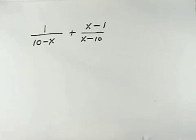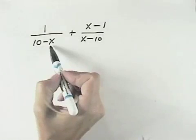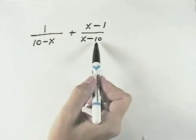So what we can do is just reverse the sign on those terms by multiplying one of our fractions by negative 1 over negative 1. And that's how we'll start this problem. So we have 10 minus x in this denominator and x minus 10 here.